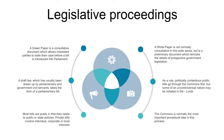The third reading of the bill considers it in its final form, usually on a purely formal basis. However, debate is still possible at this stage if demanded by at least six MPs. This delaying tactic may sometimes be used by the opposition parties to hold up the passage of a bill.